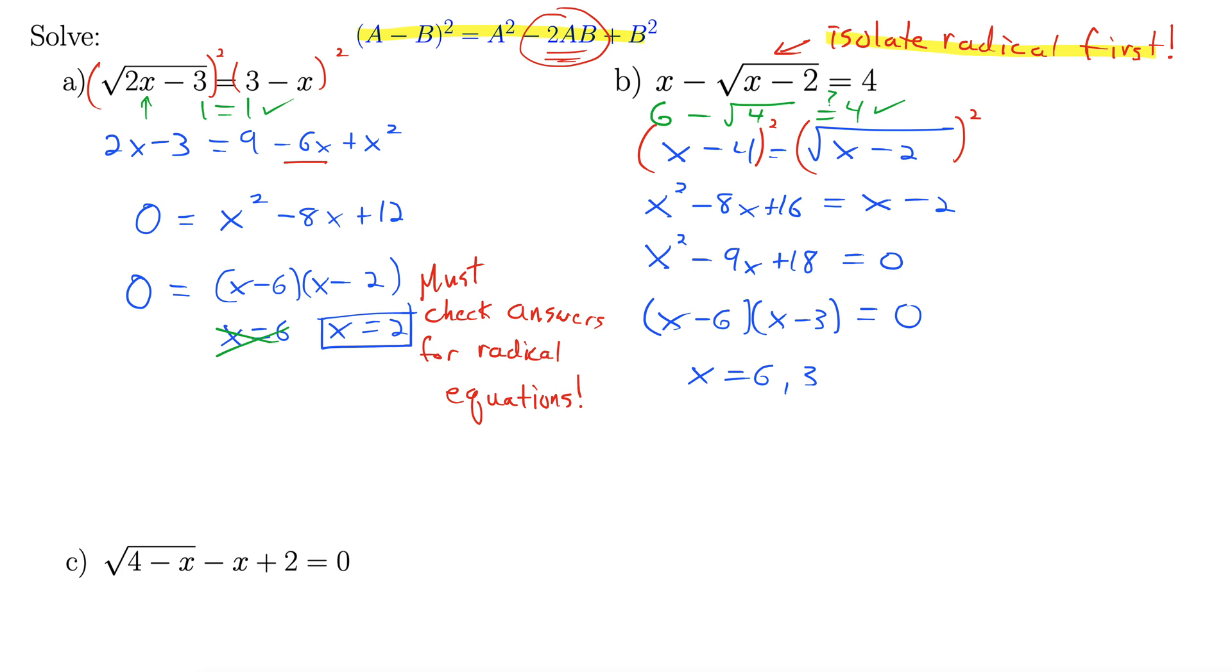How about 3? Again, plugging in for x, we have 3 minus the square root of 3 minus 2. Does that equal 4? No, it does not. 3 minus 1 does not equal 4. That equals 2. So 3 is out. That's okay. 3 is extraneous. That means it's not really a solution. We thought it was, but it's not. Well, x equals 6 is our only solution here. We would say 3 is extraneous.